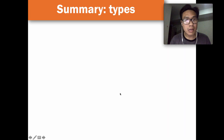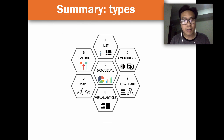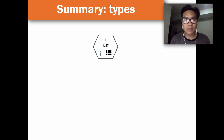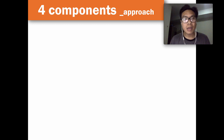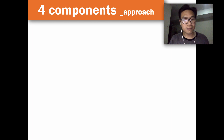In summary, there are seven commonly used types of infographics, and I hope it was very useful to think ahead about which type you will use in your infographic. Coming up, we will talk about a four-component approach to creating a very effective infographic. See you next time.